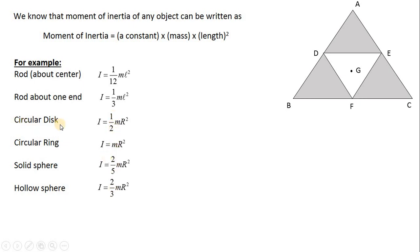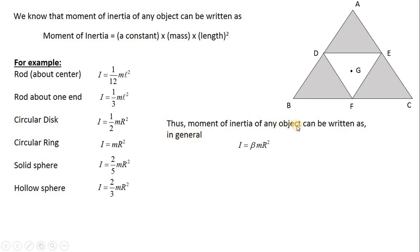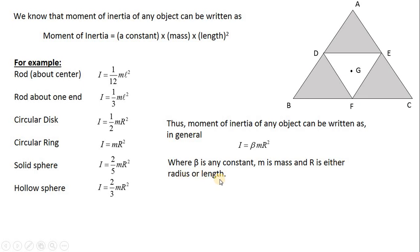Similarly, for a circular disk it is (1/2)mr², a circular ring is mr² (constant = 1), a solid sphere is (2/5)mr², and a hollow sphere is (2/3)mr². In general, the moment of inertia of any object can be written as β·m·r², where β is the constant, m is the mass, and r is either the radius or the length.